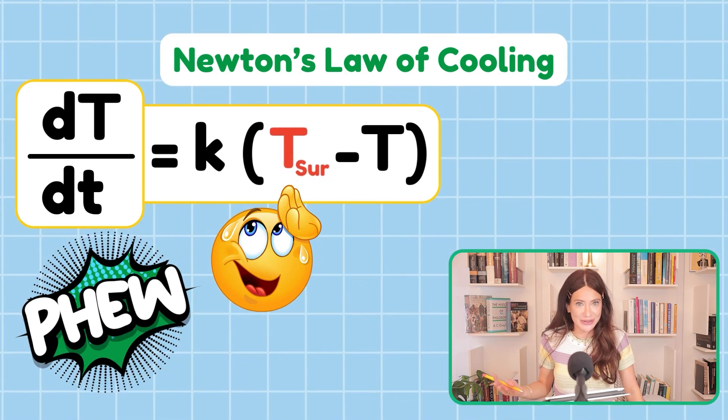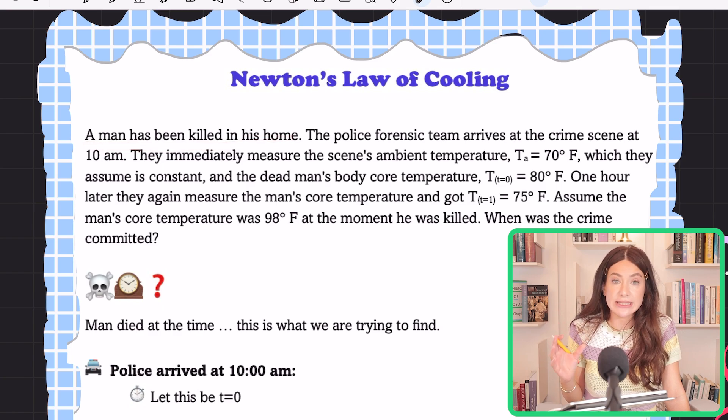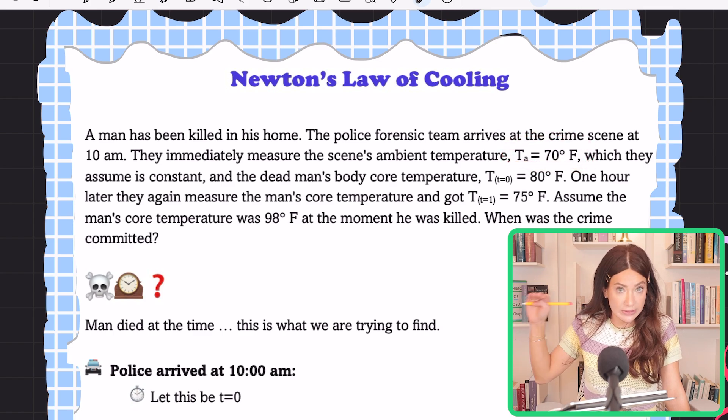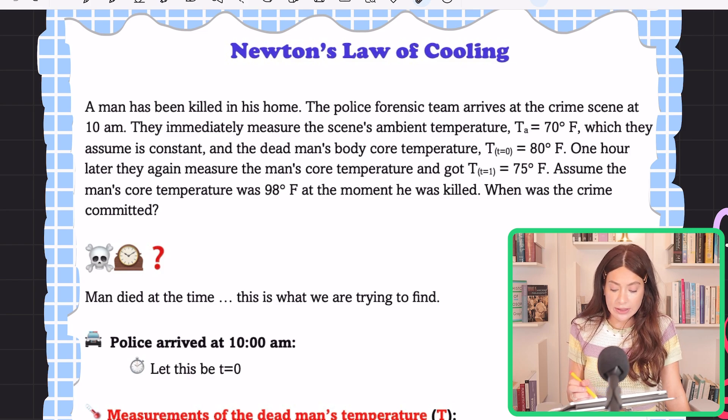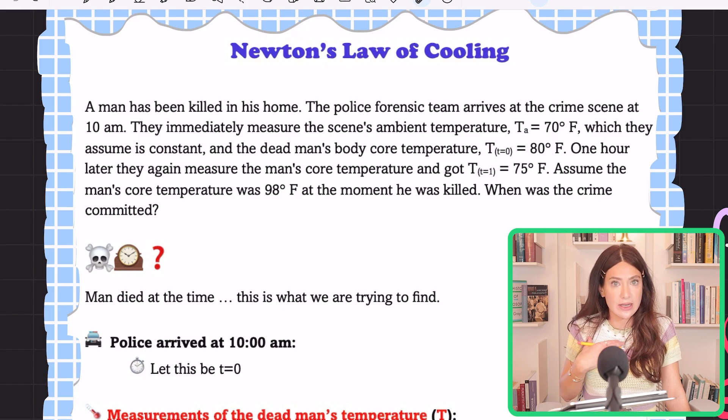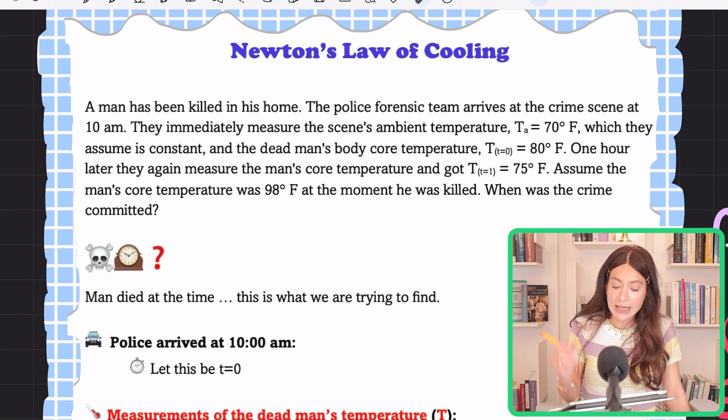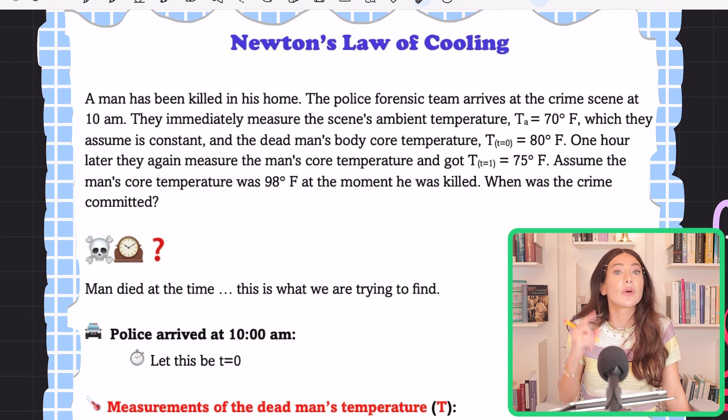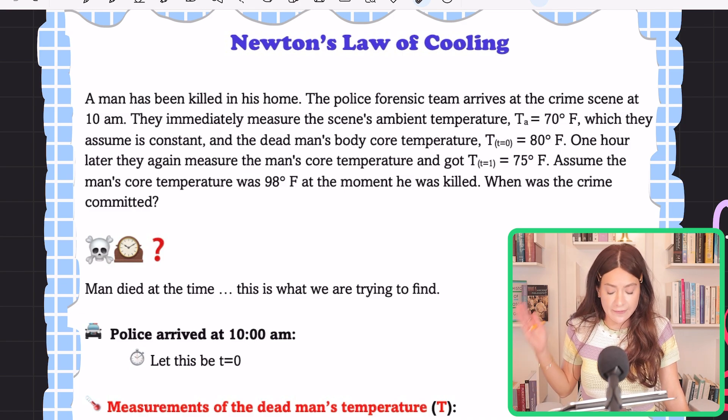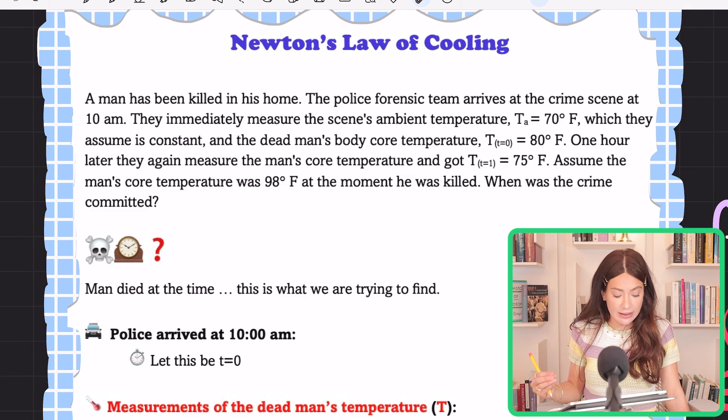Let's read the problem and try to solve it. A man was killed in his house. The police forensic team arrived at the crime scene at 10 AM. They immediately measure the scene's ambient temperature, that is what the thermostat reads, and the dead man's body core temperature at time equals zero, which is at 10 AM exactly. That is 80 degrees Fahrenheit. The second reading we're going to take is at time equal one, which will be 11 AM, and that was 75 degrees Fahrenheit. And we're going to assume that man's core temperature when he was alive was 98 degrees Fahrenheit. With this information, we will determine when he died.